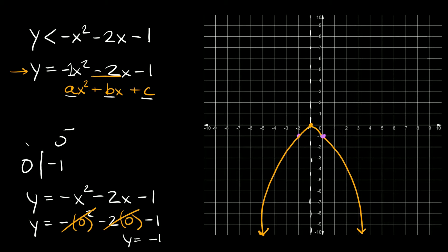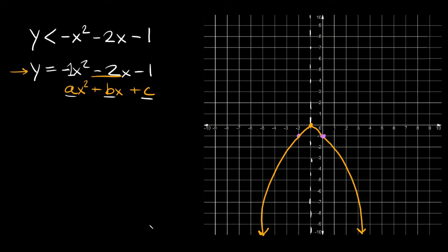Now that the parabola is graphed, the next thing we have to do is figure out if it is dashed or solid. The way you do that is simply look at the original inequality. Here we have a less-than symbol. If you have a less-than or greater-than symbol, your parabola is going to be dashed. If your inequality happens to be less-than-or-equal-to or greater-than-or-equal-to, then it would be a solid line. But here it's just a less-than symbol with no equal-to, so this is going to be dashed.